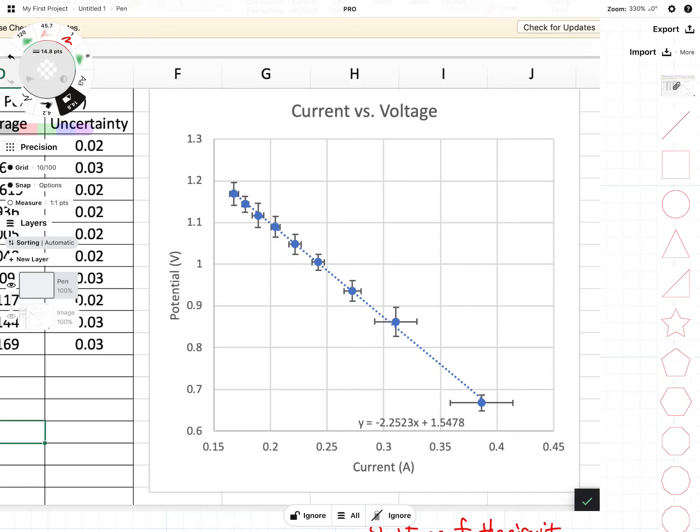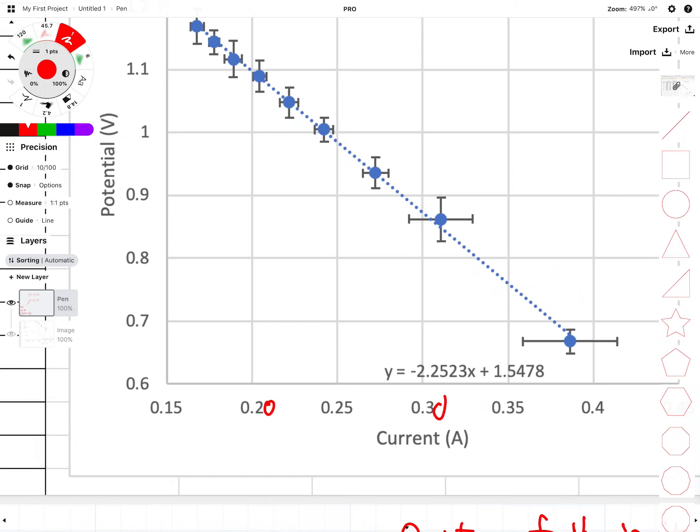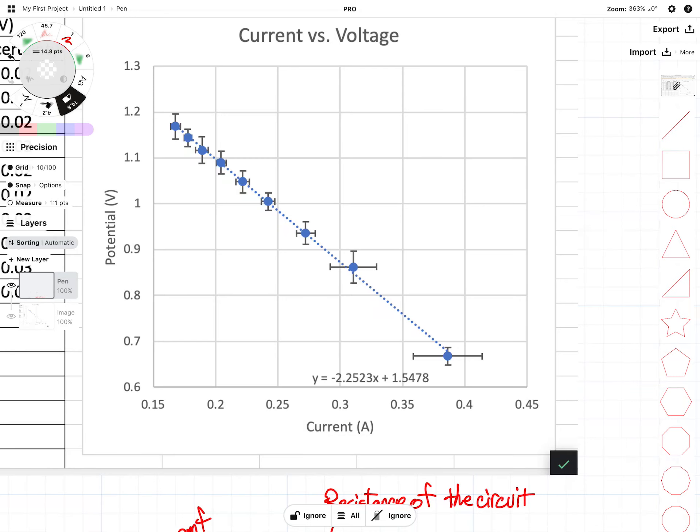Just a quick note: your decimal places or sig figs on your axes should be consistent, and as you can see they are not here. So that's a little bit of a problem. I'm not going to dwell on it, hopefully you will not either.